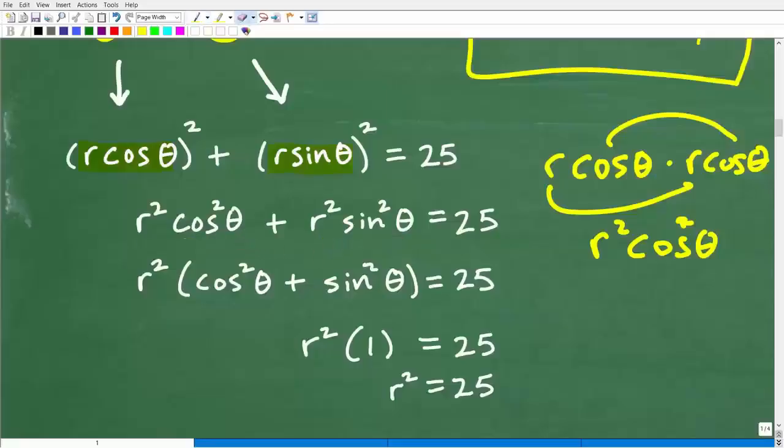And at this point, we're going to use our awesome algebra skills to factor out the GCF, the greatest common factor, because we have an r squared that's common right here. So let's factor out this r squared. So we'll have r squared parentheses, cosine squared theta plus sine squared theta. All this in parentheses equal to 25.